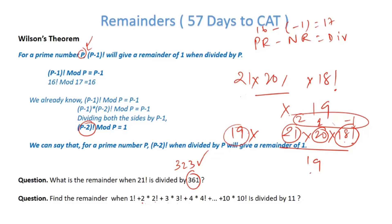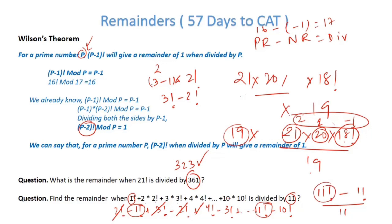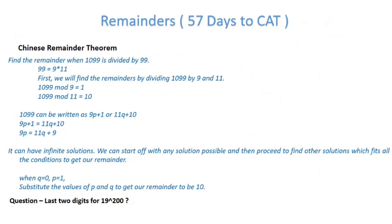Pattern spotting problem: 1×1! + 2×2! + 3×3! + ... + 10×10! divided by 11. Notice that k×k! = (k+1)! − k!, so the sum telescopes: 2! − 1! + 3! − 2! + ... + 11! − 10! = 11! − 1. Dividing by 11: 11! is completely divisible by 11, so the final remainder is −1, or positive remainder 10.